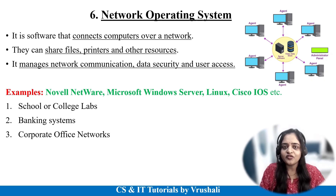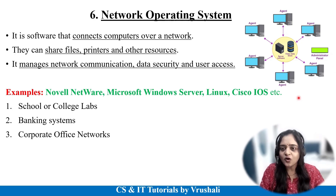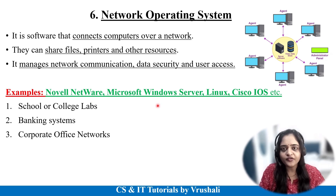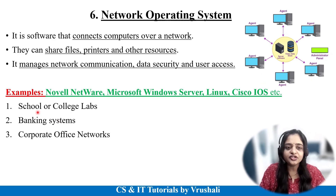The next and last type is the network operating system. As you may have learned in computer networks, multiple computers are connected in one single network and they share files, printers, and other resources with each other. All this network communication is managed by the network operating system. Examples include Novell NetWare, Microsoft Windows Server, Linux, and Cisco IOS — they implement network communication efficiently and accurately. Networks like LAN, WAN, and MAN use this OS to maintain proper communication, and it is also used in school and college labs, banking systems, and corporate office networks.